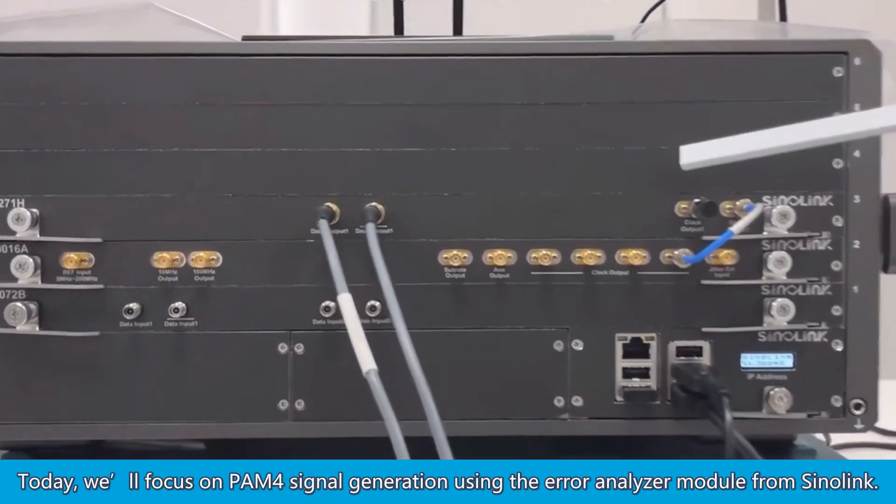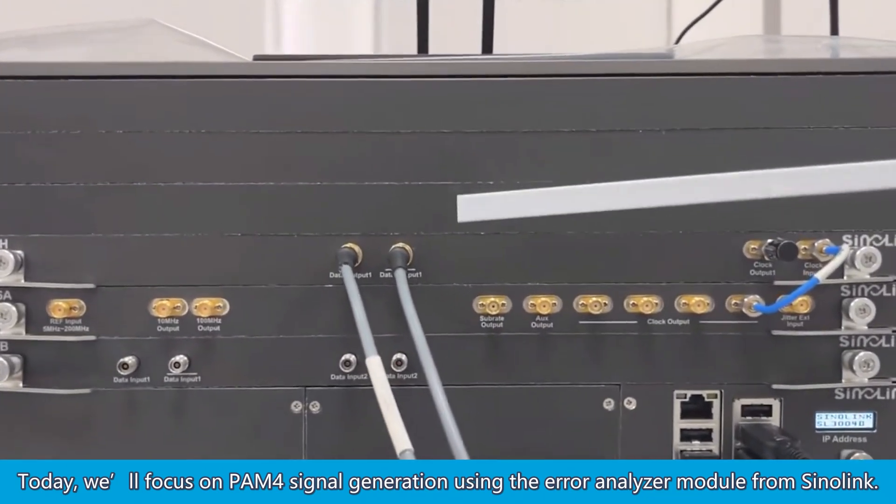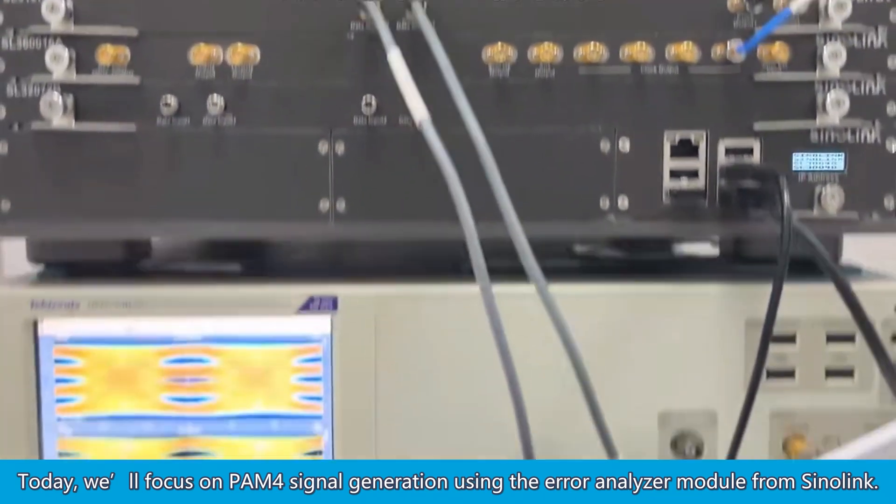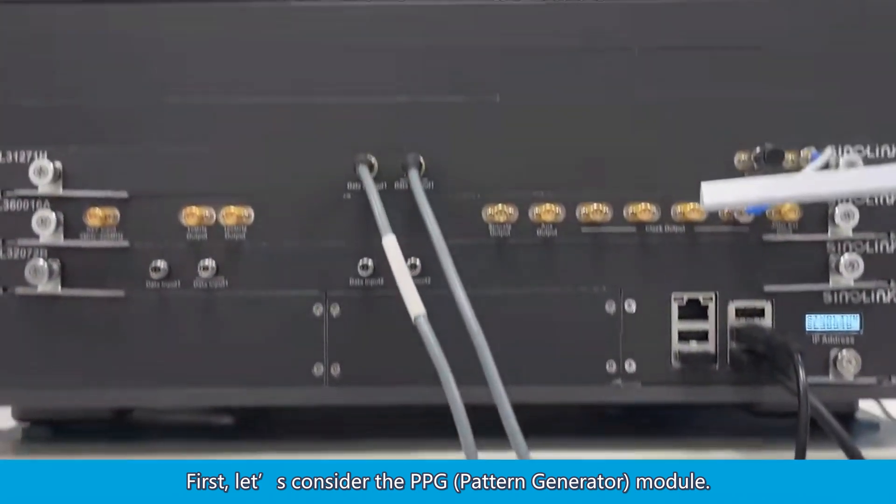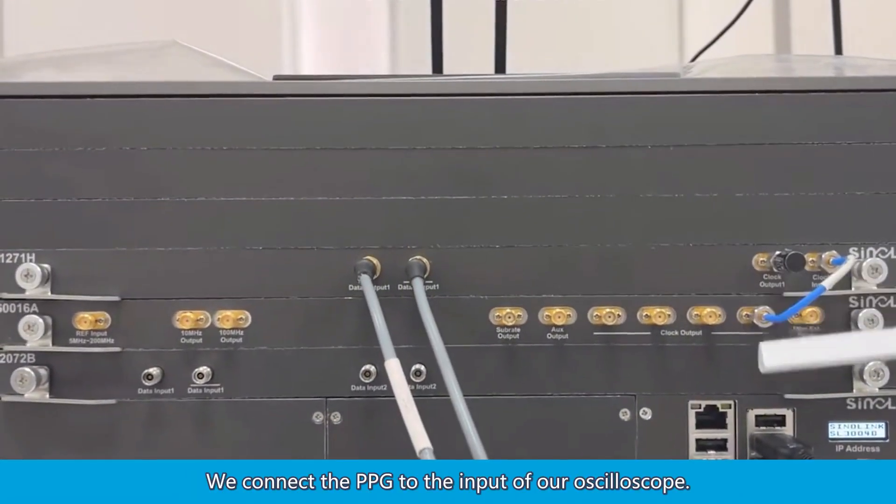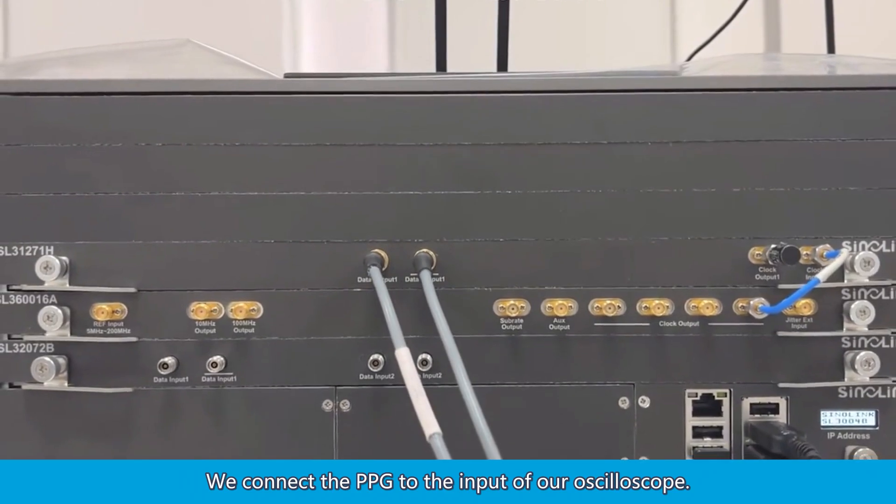Today, we'll focus on PAM-4 signal generation using the Error Analyzer module from Synolink. First, let's consider the PPG module. We connect the PPG to the input of our oscilloscope.